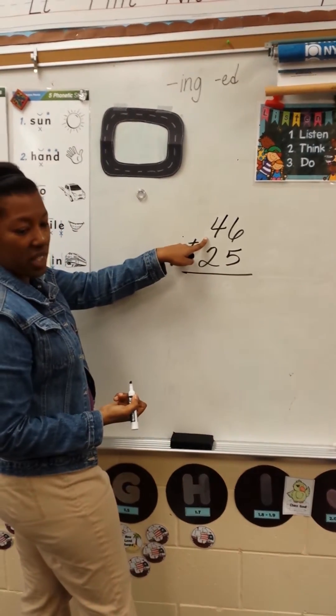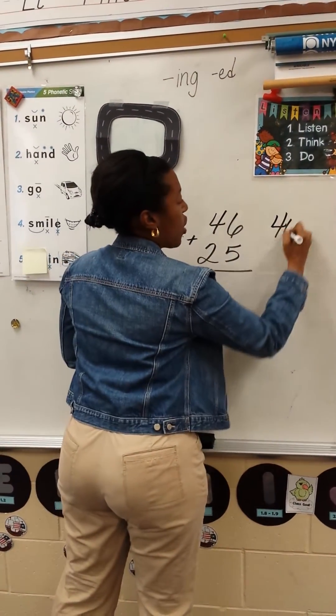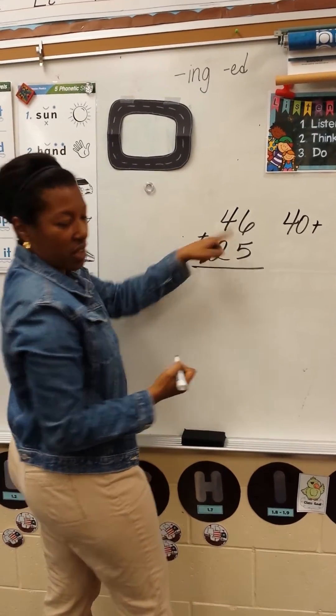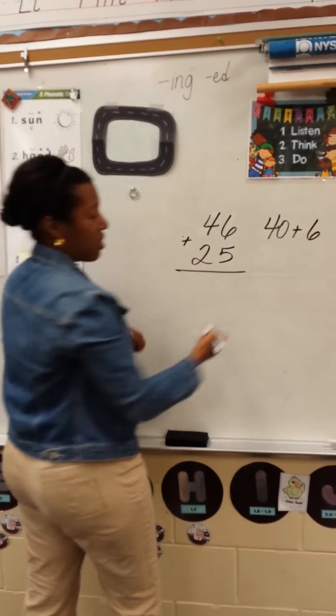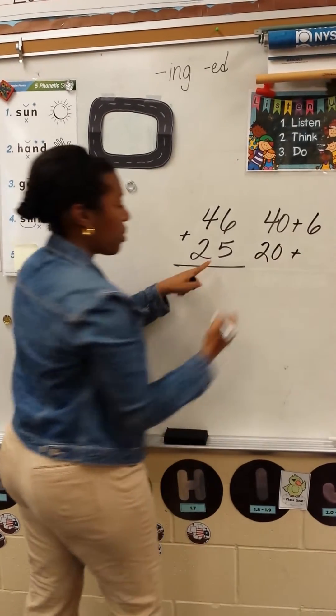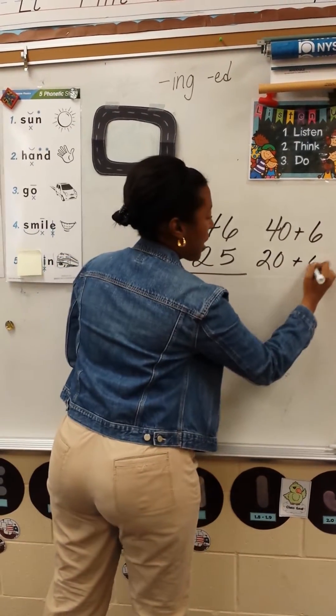What is the value of this digit? 40! What is the value of this digit? 6! What is the value of this digit? 20! What is the value of this digit? 5! Now let's add.